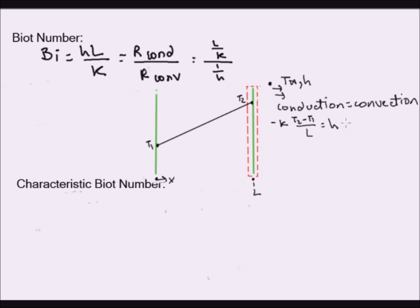And that would be equal to H times T2 minus T infinity times the area. But the areas are equal, so there's a flux balance. And then if we rearrange, we can flip the sign here to get rid of the negative sign. And we can rearrange to have H over K over L, which is the Biot number.